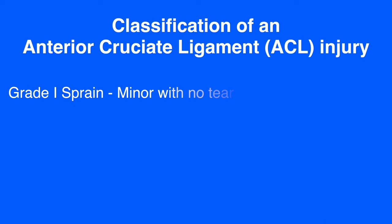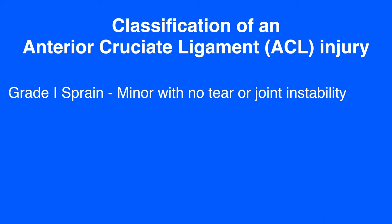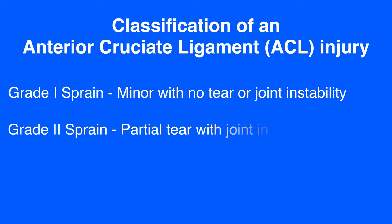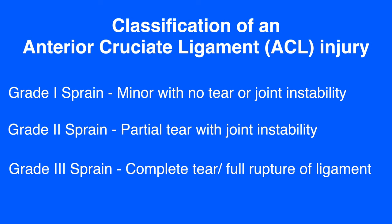An injury to this ligament can be expressed as grade 1, which is a minor sprain where the ligament is stretched but doesn't tear or feel unstable. Grade 2 is a partial tear of the ligament fibers which causes some instability during certain activities. Grade 3 is a full thickness tear or complete rupture of the ligament causing a very unstable knee joint — this type would not heal and would likely require surgery.